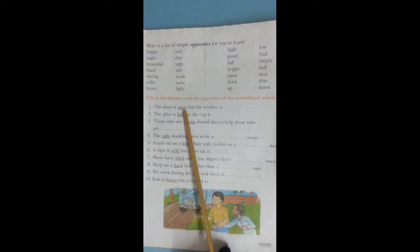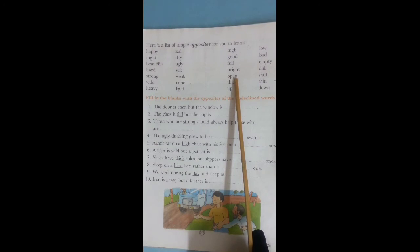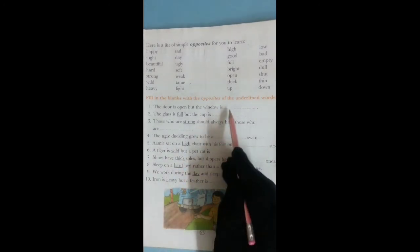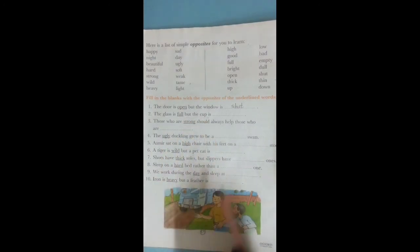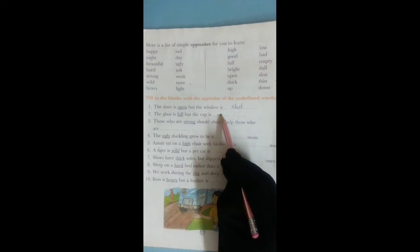Fill in the blanks with the opposites of the underlined word. Number one: The door is open but the window is? Yes. Find the word open. The opposite word of open is shut. So we write here shut. Read the second sentence. The glass is full but the cup is? Yes, full. Find full. Full, empty. But the cup is empty. Write here empty.